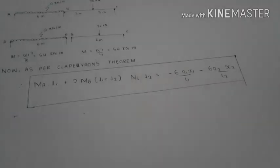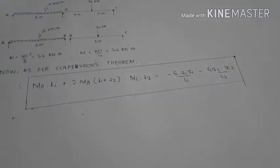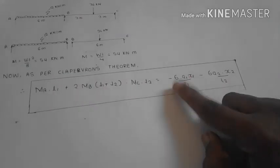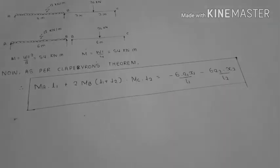As per Clapeyron's theorem, the universal formula is: MA into L1 plus 2 into MB into L1 plus L2 plus MC into L2. So this is the formula of Clapeyron's theorem, this is the universal formula. Now for continuous beam, the formula is equal to minus 6 into A1 into X1 upon L1 minus 6 into A2 into X2 upon L2, so this is the formula you have to use.